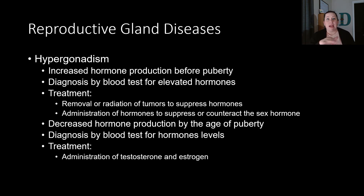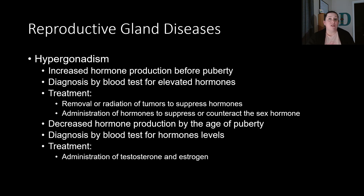The next condition is hypogonadism — decreased hormone production by the age of puberty, where the body isn't producing enough. Diagnosis is by a blood test for hormone levels, showing that puberty hasn't started as it should. Treatment involves administering the proper hormone — an increased amount of testosterone or estrogen depending on their sex — allowing them to develop normal puberty secondary sex characteristics even though their body isn't producing those hormones yet. This might be a lifelong treatment depending on the underlying cause.